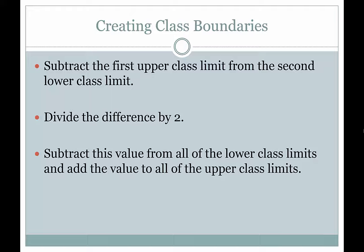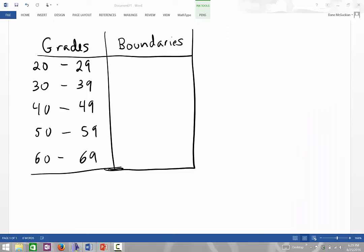So let's look at an example and show how that's done. All right, so here is a simple frequency distribution. I've left off the frequencies, but I've given you a set of classes that are using class limits, and I want to convert them to class boundaries. So we have 20 to 29, 30 to 39, so on and so forth.